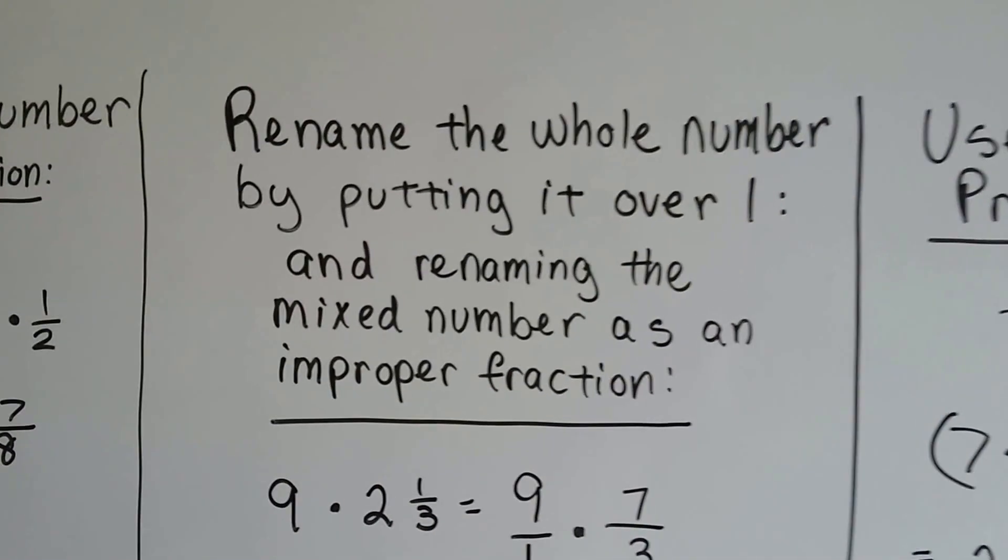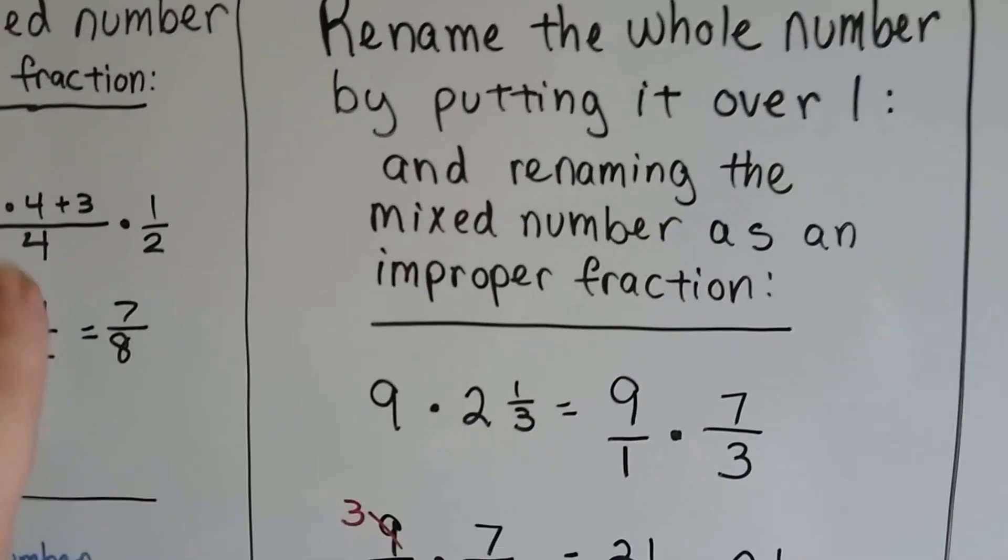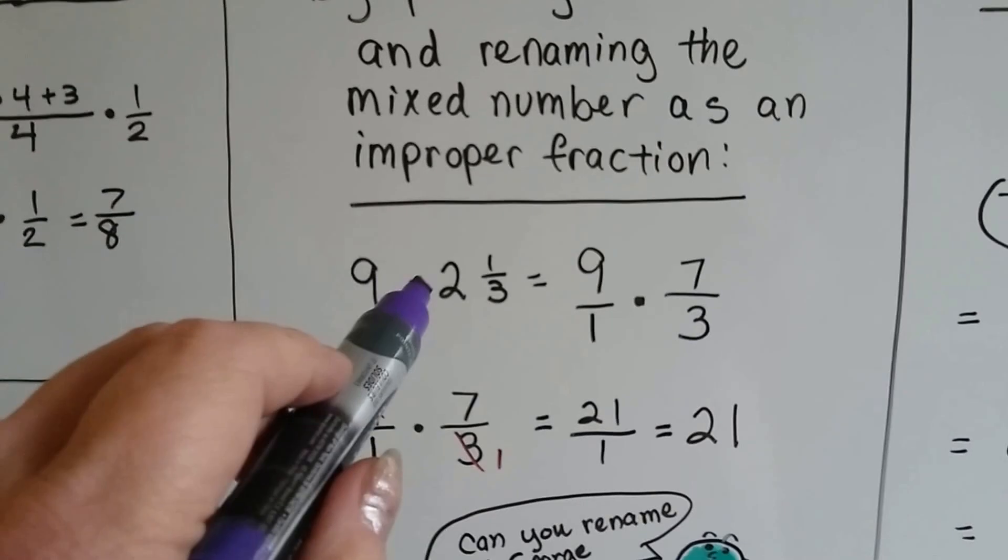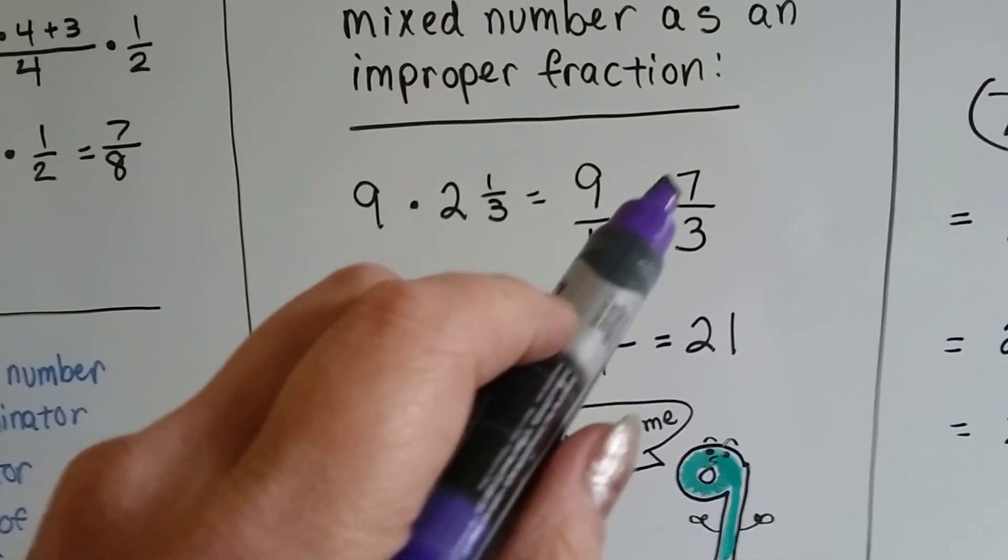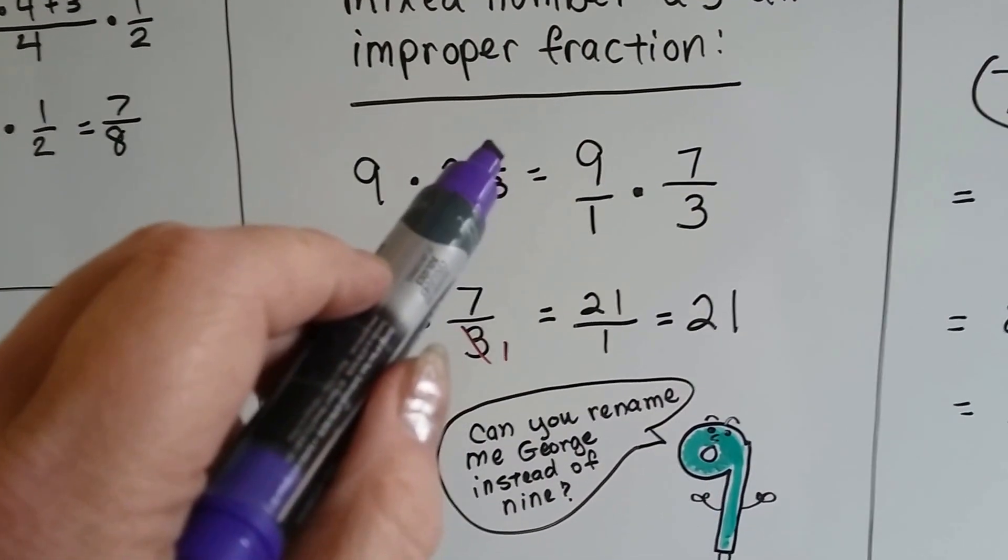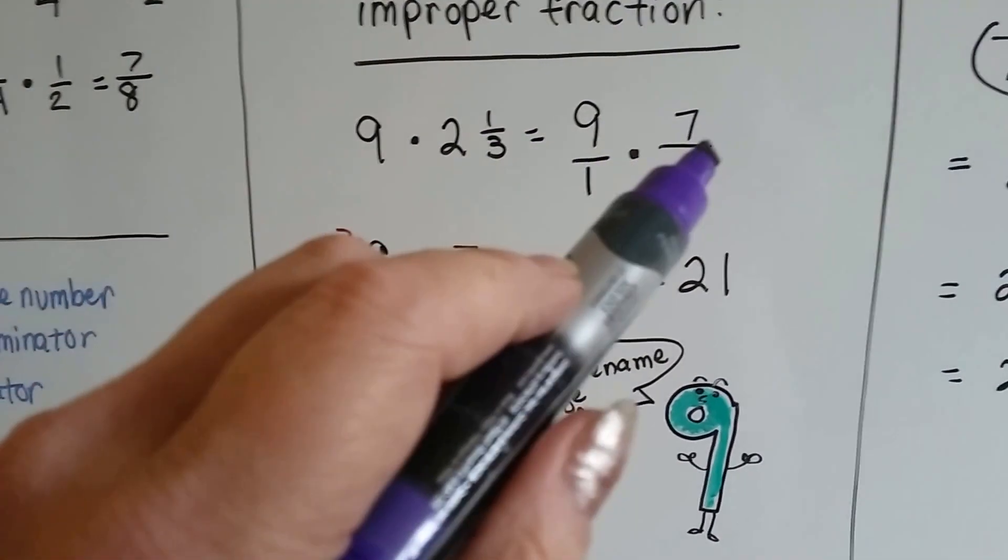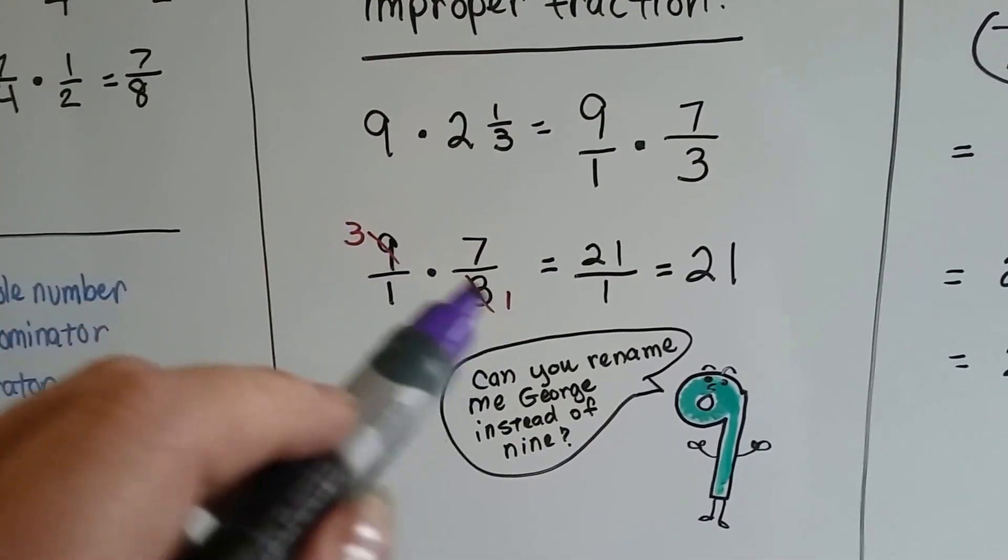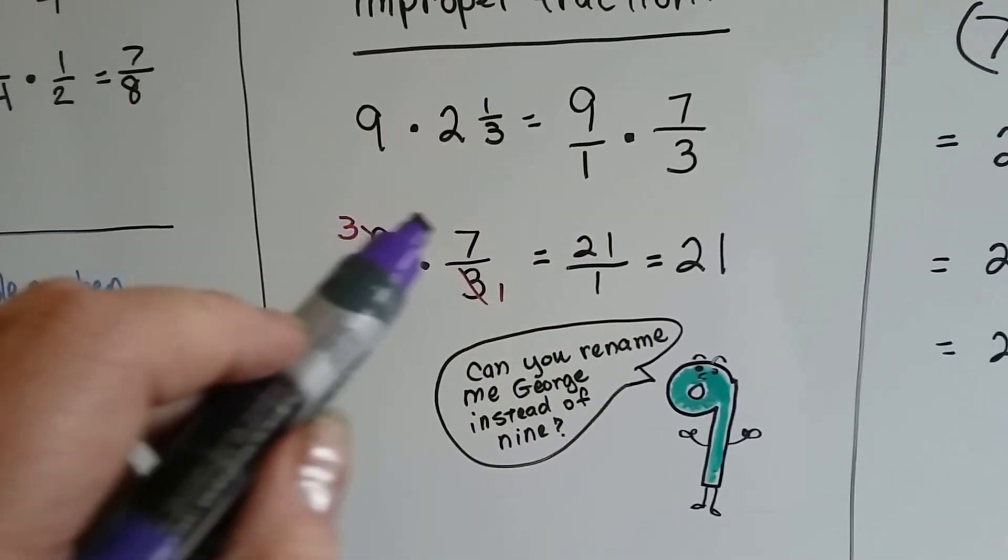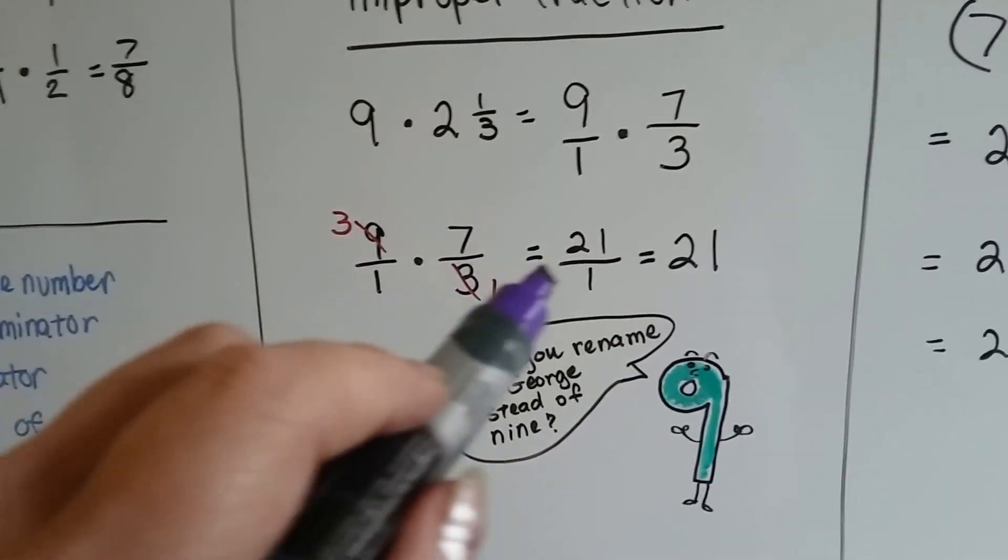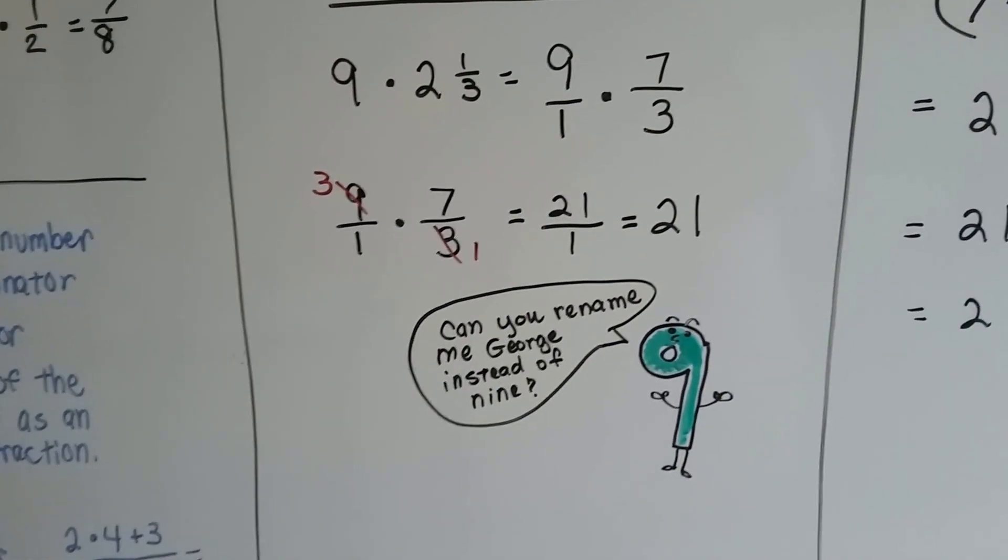We can rename the whole number by putting it over a 1 and renaming the mixed number as an improper fraction like we just did here. 9 times 2 and 1 third becomes 9 over 1 times 7 thirds. 2 times 3 is 6 plus 1 is 7 over the 3. Now we can just cancel out. The 9 and the 3 cancel each other out as a 1 and a 3, and now we can just multiply across. 3 times 7 is 21, and 1 times 1 is 1. 21 over 1 is 21. See?